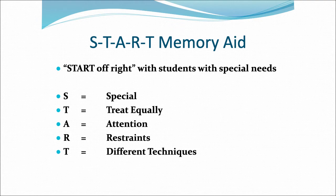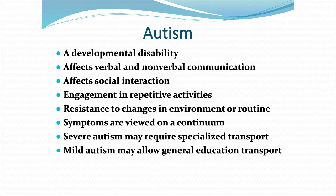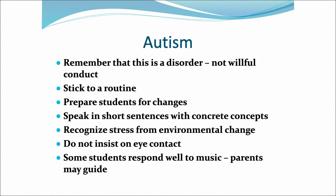Here are the ten categories used to identify students with disabilities under IDEA. Autism is listed among them. These are some of the characteristics of autism. Remember that it is a disorder, not willful conduct — not something they necessarily have control over.